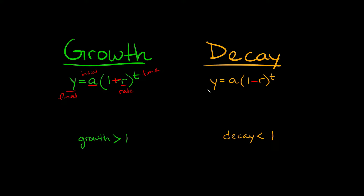The decay equation is the same, the only difference is the r is a little bit different. In the decay equation, r is called your decay rate or rate of decay.